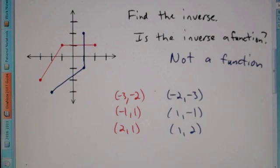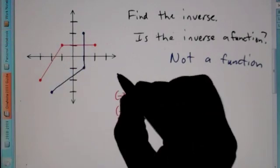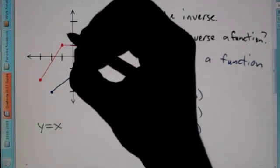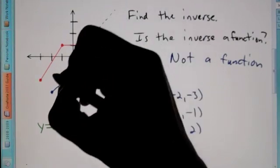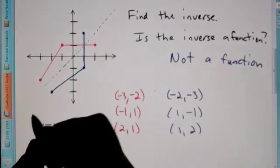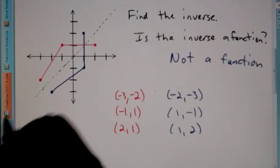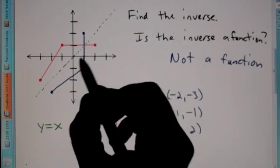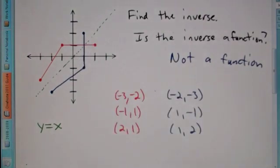A way to tell if you've done the graph correctly is: if you were to draw the equation y equals x — basically at a 45-degree angle — and draw a dotted line like this, notice the original graph and its inverse would be symmetrical on both sides of that line y equals x. So every graph, when you graph the inverse correctly, will be symmetrical to y equals x.